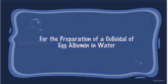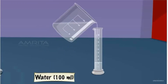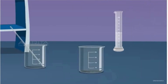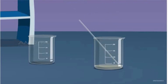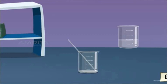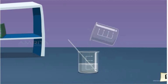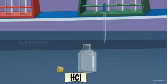Next is the colloidal of egg albumin in water. We're going to need 1 gram of egg albumin, mix with 5 ml of water, and pour it inside the beaker. Mix vigorously. After mixing, pour the remaining water from the beaker. Mix vigorously and add hydrochloric acid.